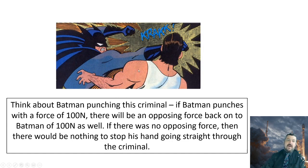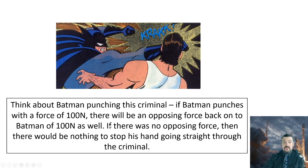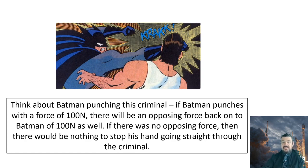Think about Batman punching a criminal: if Batman punches with a force of 100 Newtons, there will be an opposing force back onto Batman of 100 Newtons as well. If there wasn't an opposing force, there would be nothing to stop his hand going straight through. When you hit something, it's the opposing force that causes the pain — the physics is the cause of the pain in the first place, while the biology side is how your brain recognises it.